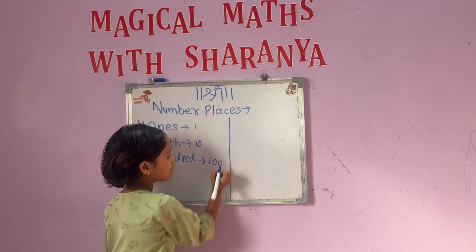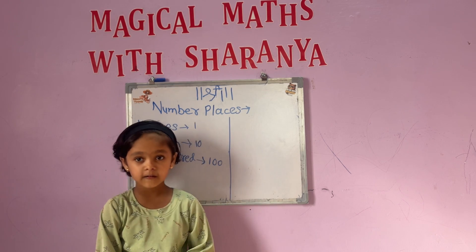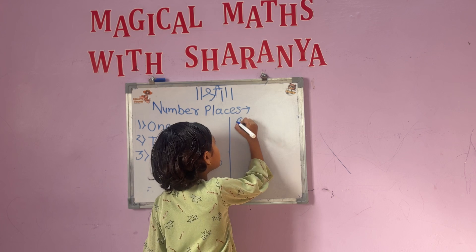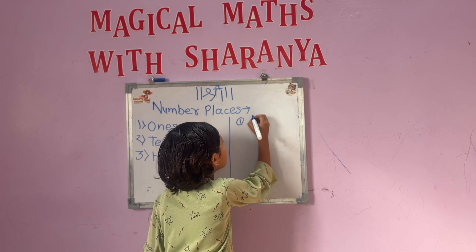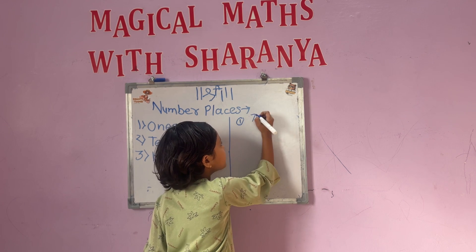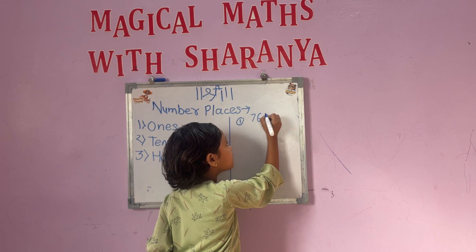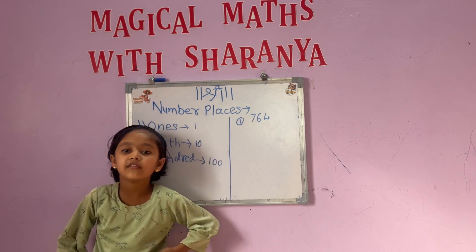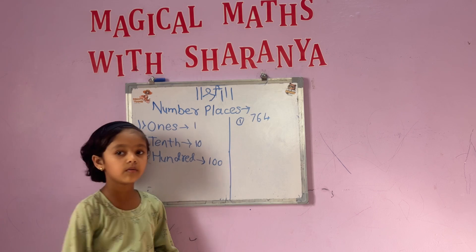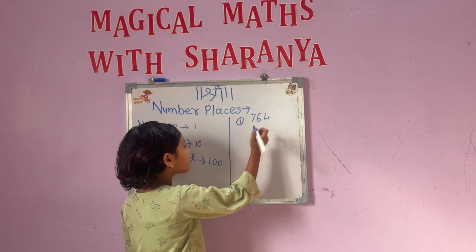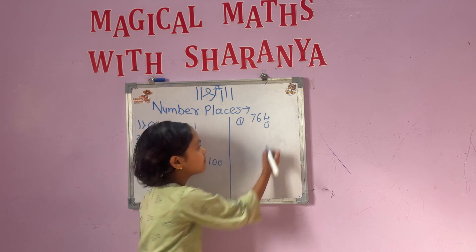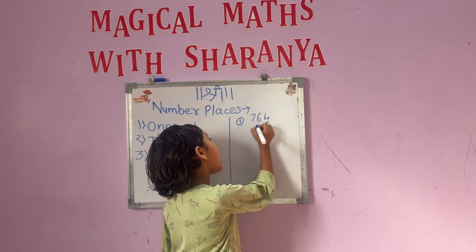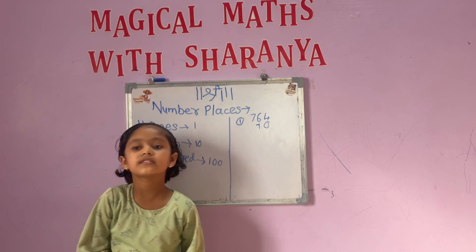Now let's take some examples. The first example is 7, 6, and 4. In that, the 1st place is 4, the 10th place is 6, and the 100th place is 7.